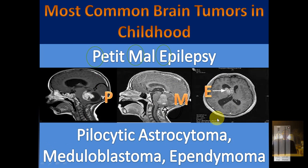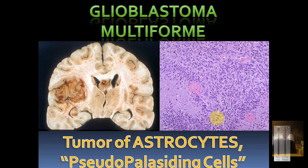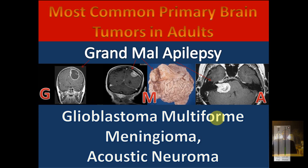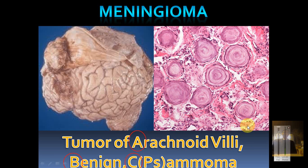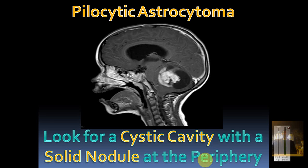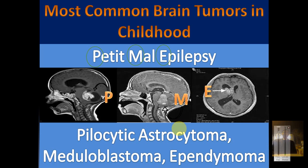You will most commonly be asked questions on pilocytic astrocytoma or medulloblastoma. Medulloblastoma is highly malignant compared to pilocytic astrocytoma and is more dangerous. If you want to identify the most malignant childhood tumor, medulloblastoma comes first, but pilocytic astrocytoma is more common in frequency of appearance on the USMLE.